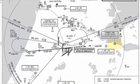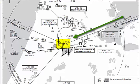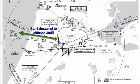Let's start our approach from ATRIP, that is also our initial approach fix. From there, we will fly from an altitude of 7000 and track the inbound course 250 to Skibole VOR. Once we pass Skibole VOR, we will track our outbound course roughly 265 degrees.